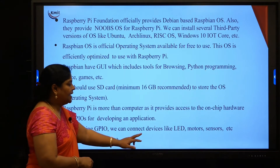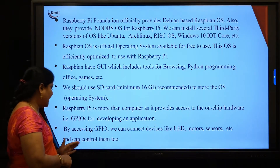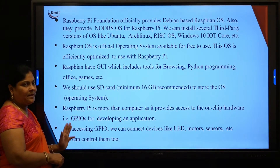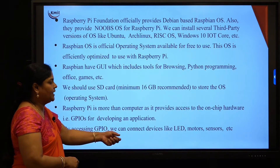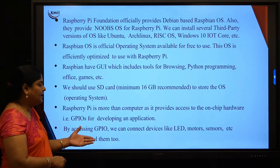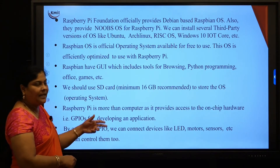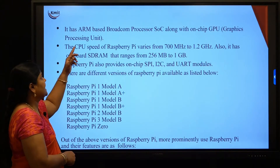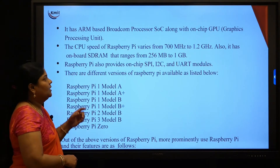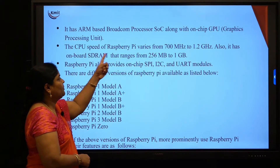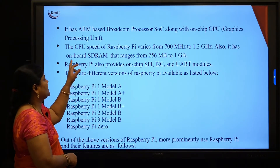By accessing the GPIO pins, we can connect devices like LEDs, different types of motors, and sensors which can be controlled through Raspberry Pi. This topic will extend in further sessions where you will see practically how to connect an LED to Raspberry Pi and display the output. Raspberry Pi has an ARM-based Broadcom processor, also called SOC, along with an on-chip GPU.